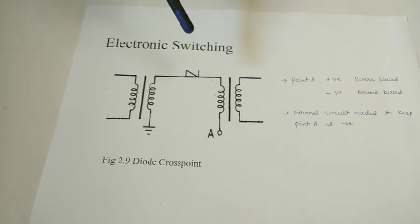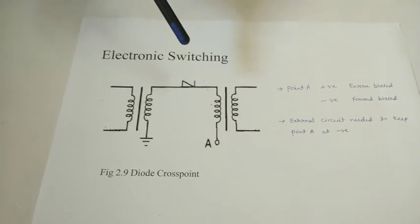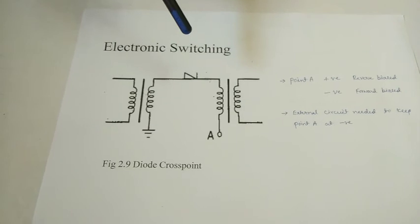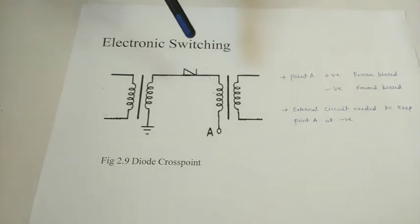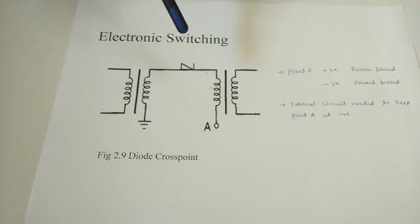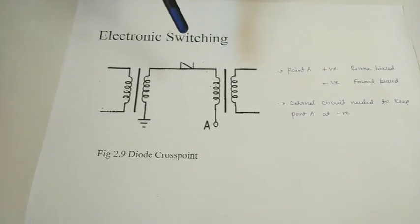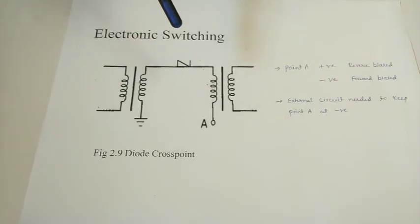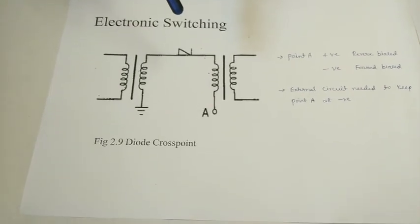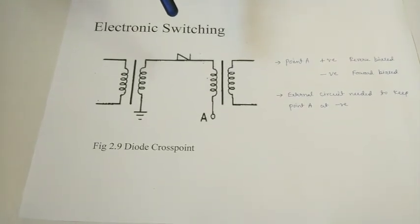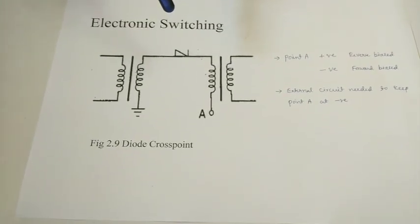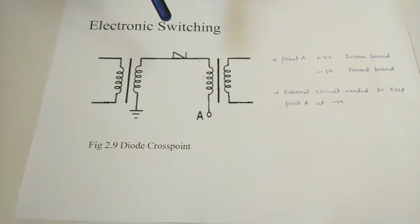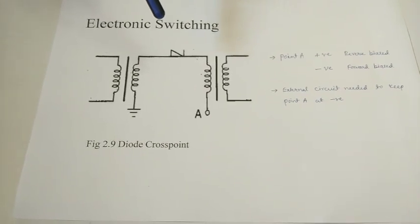At the last, we can have an FDM system — that means frequency division multiplexing system — which was used in earlier days. The switching system may be classified as space division and time division, which will be explained in further chapters. Thank you.